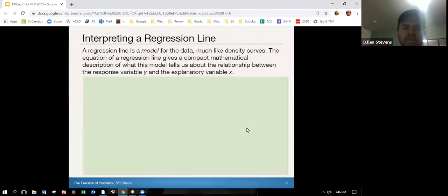So what we do is we try to build that line. We use that line. It's kind of like it's not perfect, but it's a model for the data, much like when we're doing density curves, just like the normal curve is a density curve that sometimes can help model our data. So the equation of the regression line gives a compact mathematical description of what this model tells us about the relationship between the response variable y and the explanatory variable x.